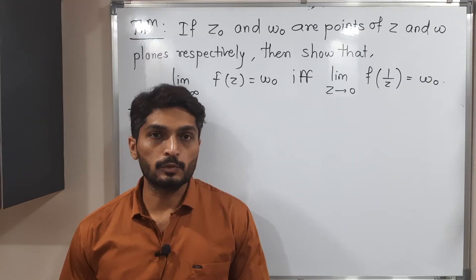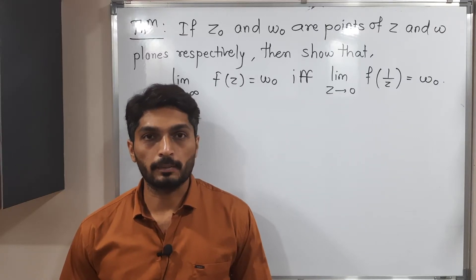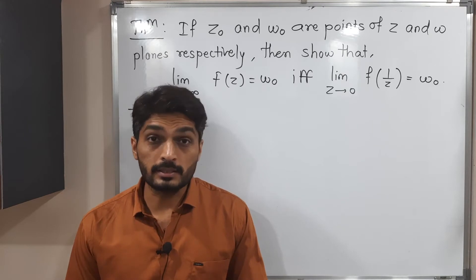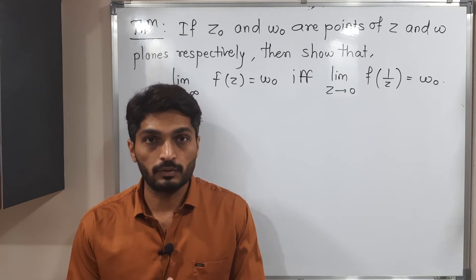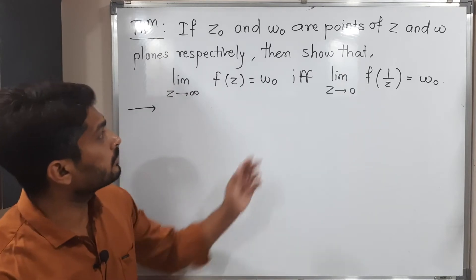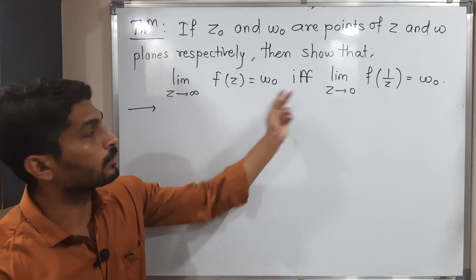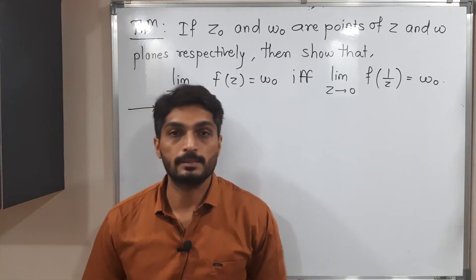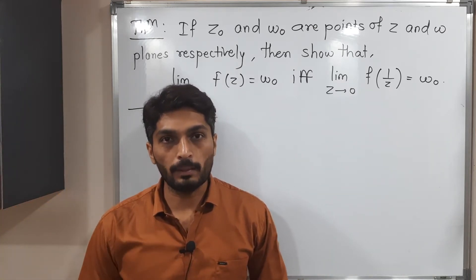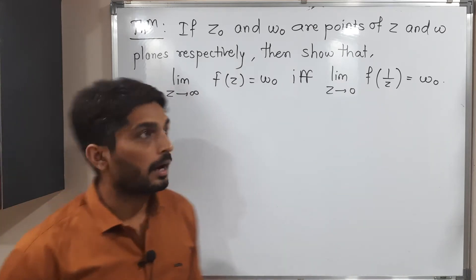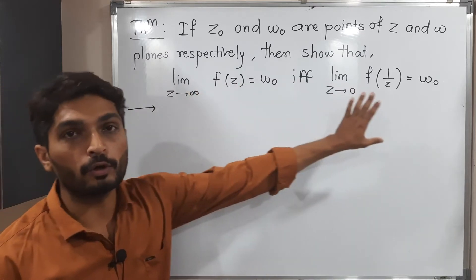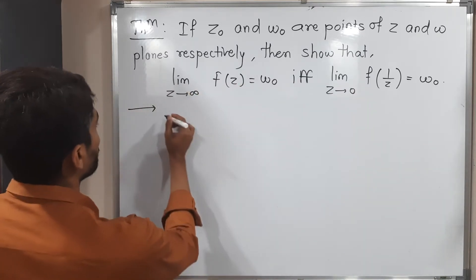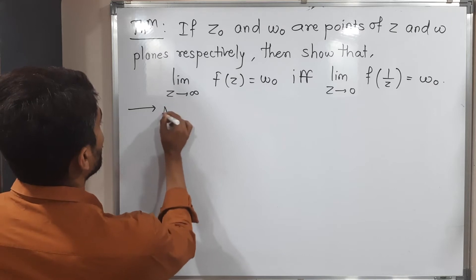Let us discuss this very important theorem — it is very interesting. Let us discuss its proof. As you can see, there is an if-and-only-if part, so we have to prove in both ways. Let us start with one part: I am assuming one side and going to prove the other.